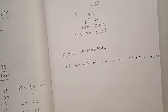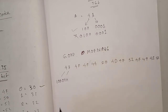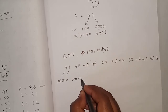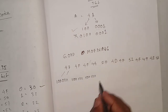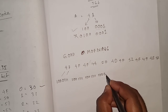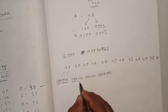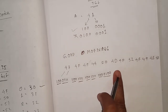Now we write the 7-bit binary for each value. G (47): 4 = 100, 7 = 0111 → 1000111. O (4F): 4 = 100, F = 1111 → 1001111. O (4F): same → 1001111. D (44): 4 = 100, 4 = 0100 → 1000100. Space (20): 2 = 010, 0 = 0000 → 0100000. This way we complete the entire encoding.